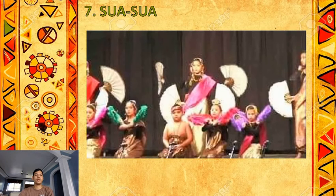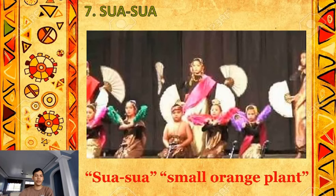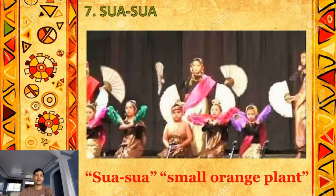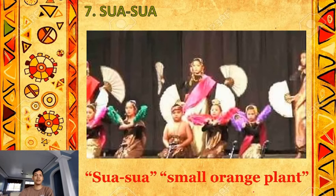Number seven is Suwa-suwa or Swaswa, a dance from Jolo, Sulu. Literally, suwa-suwa means small orange plant. According to the Moros of the older generation, the movements in this dance have been modified and modernized. The dancers sing as they perform the dance, and the natives often repeat the dance as many times as they like or until they are made to stop.